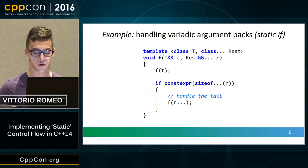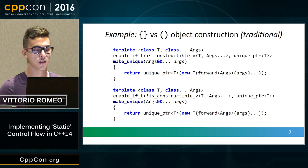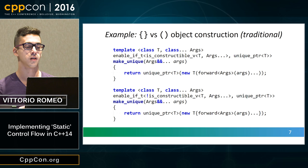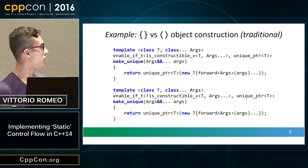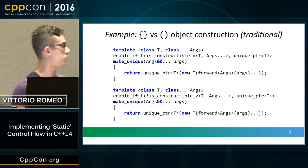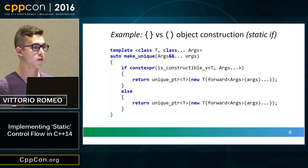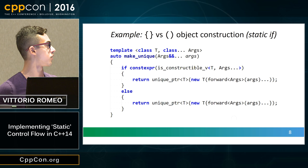Another example is constructing objects. Say we're building our own version of make_unique and want to switch between brace initialization and round-parenthesis initialization. Using enable_if requires two versions of the same function with noisy syntax. If we had if constexpr, all of that would go away — we'd have a single function switching on a compile-time condition and returning depending on the result.